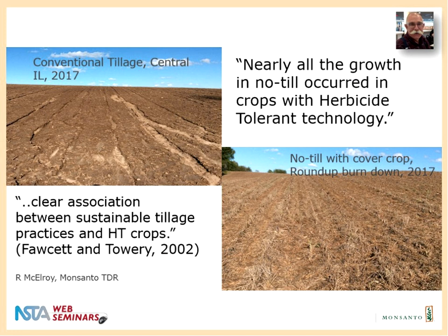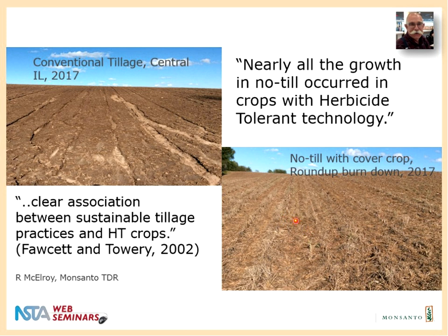Here's a dramatic example from the beginning of the modern ag period when everybody was doing conventional tillage. This picture taken by Randy McElroy in central Illinois shows the erosion caused by conventional tillage in the spring of 2017. In contrast, another field is in no-till, where a farmer grows a cover crop, then uses Roundup herbicide to kill the cover crop in what's called a burndown, and then plants. There's a significant amount of soil conservation going on with no-till, and there's a clear association between sustainable tillage methods and the use of herbicide-tolerant crops — this became standard practice since about 1995.